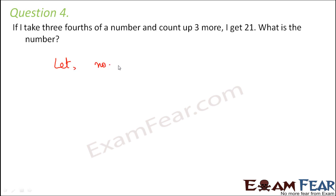Let us say that the number is X. So what are we actually doing? We take 3 fourths of this number. That means 3 by 4 X. And then we count up 3 more. That means we are adding 3 more to it. So 3 by 4 X plus 3. And what do we get? We get 21. So 3 by 4 X plus 3 is equal to 21.